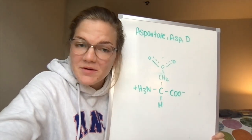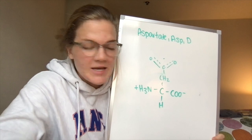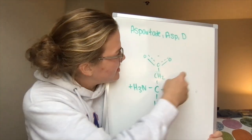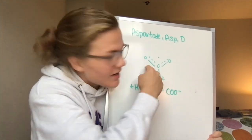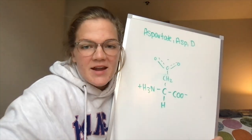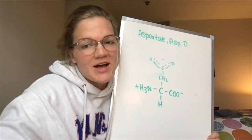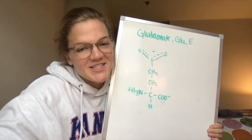Here we have aspartate with the three-letter abbreviation ASP, the one-letter abbreviation of D. For our side chain here we have a carbon in this group. A fun fact is that aspartate is found in sugarcane and sugar.